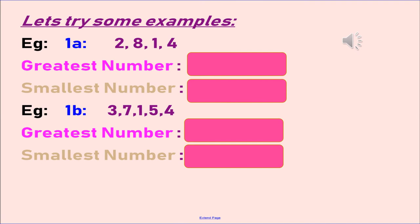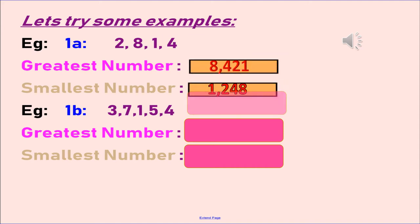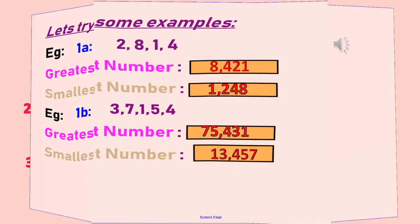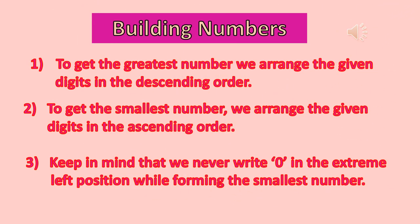I know that you can do these examples by yourself. Now try to do it yourself, my children. To summarize: to get the greatest number, we arrange the given digits in descending order. To get the smallest number, we arrange the given digits in ascending order. But if one of the given digits is 0, we need to keep in mind not to place 0 at the extreme left position. Let us find out why in the next slide.